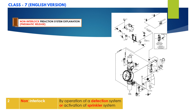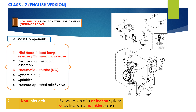Now let us go through the pneumatic release type non-interlock pre-action system. The concept is the same with only slight modification in components. As you can see on screen, there is no electric release panel or electronic devices. In this pneumatic release type, you will have pilot heads, fixed temperature release sprinklers, or thermostatic release devices, along with the deluge valve with complete trim assembly and a pneumatic actuator — there is no solenoid valve. System piping connected to the sprinklers and a pressure-operated relief valve are also present.